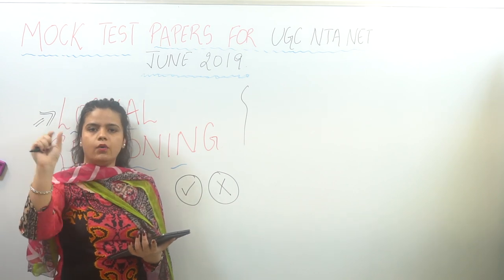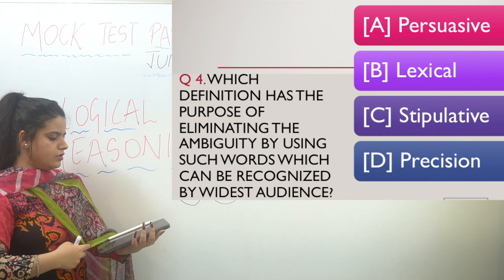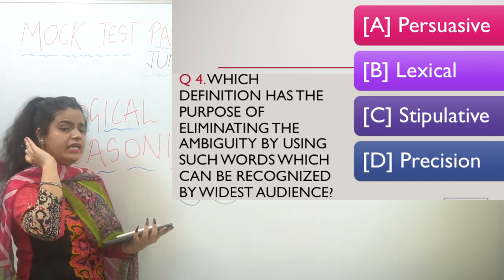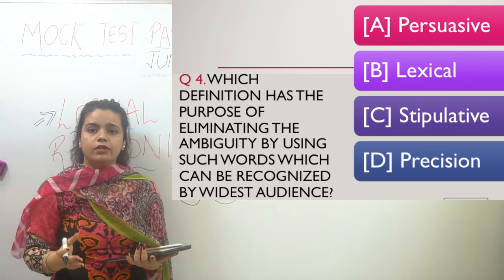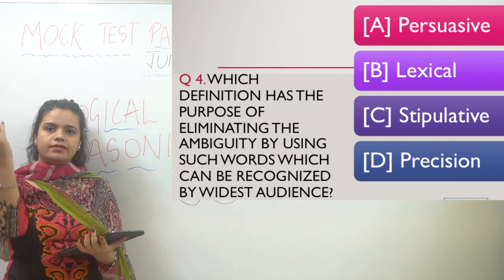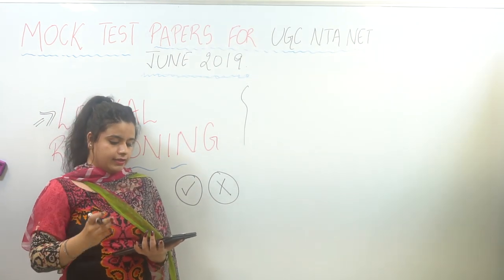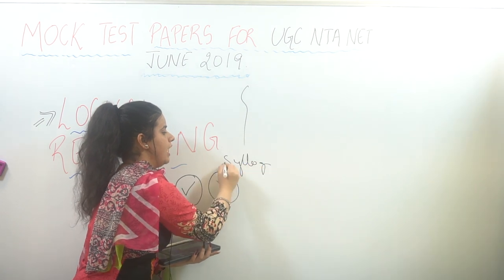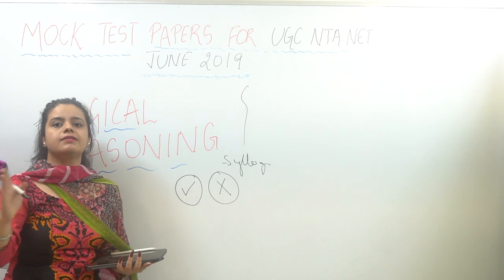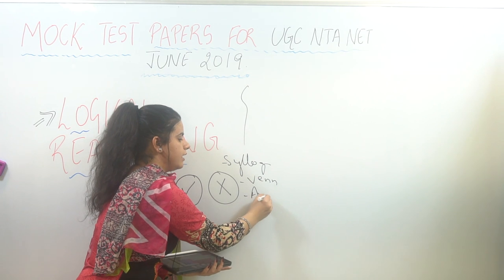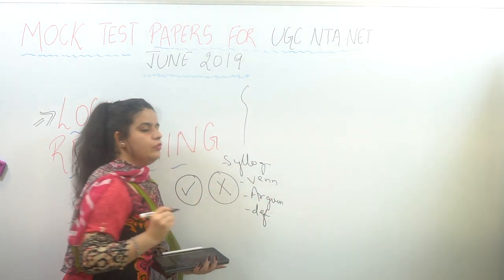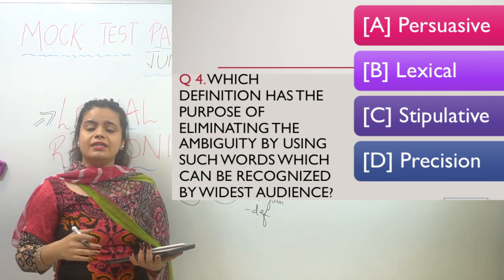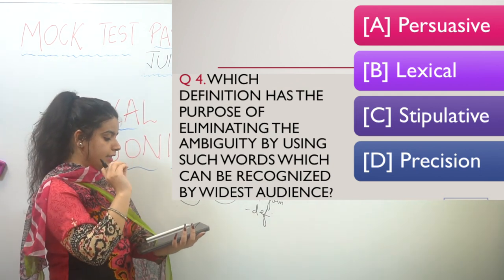The fourth question asks which definition has the purpose of eliminating ambiguity by using words that can be recognized by the widest audience. This is the clear-cut definition of lexical. In logical reasoning you have several types of definitions: stipulative, persuasive, precision, lexical, and causal — all are very important. This question comes directly from the lexical definition, which uses words understandable by the widest audience.